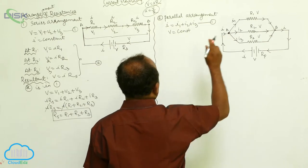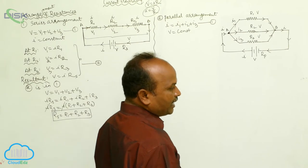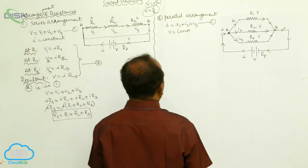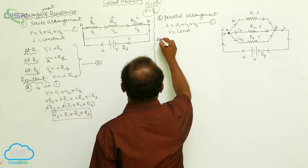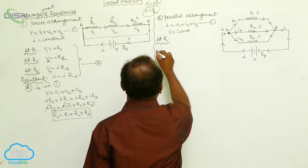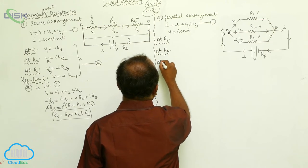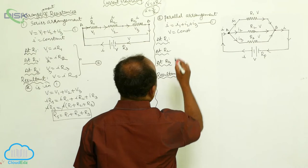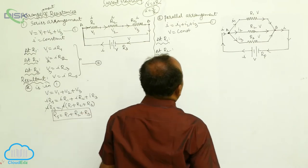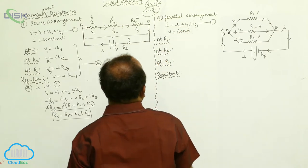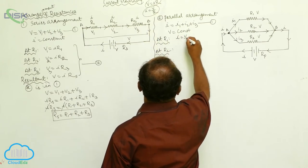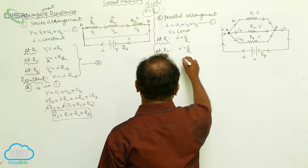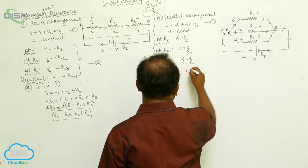In the parallel arrangement, three resistances are contained in the electric circuit. All the first terminals are connected to a common point A, all the second terminals are connected to another common point B. Apply Ohm's law across every resistance. I equals I1 plus I2 plus I3. Applying I equals V by R: across R1, I equals V by R; across R2, I equals V by R; across R3, I equals V by R; across the resultant total resistance, I equals V by Rp.